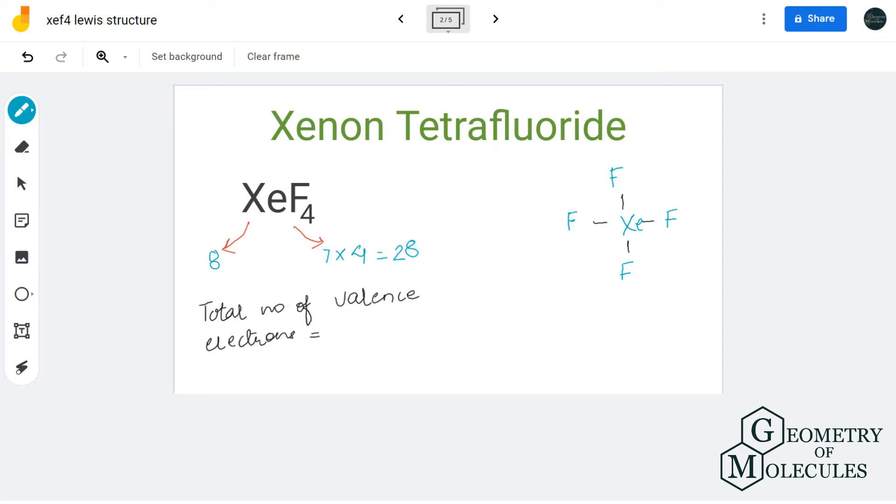Once we know that, we'll put xenon in the center as it's the least electronegative atom in this molecule. After doing this, let's place all fluorine atoms around the central atom.